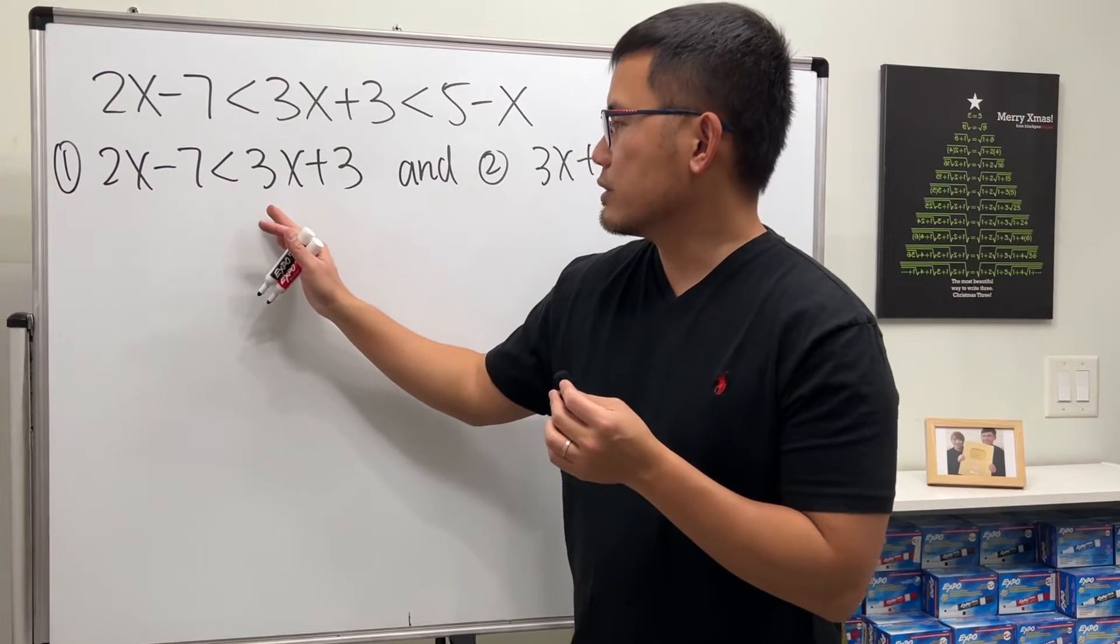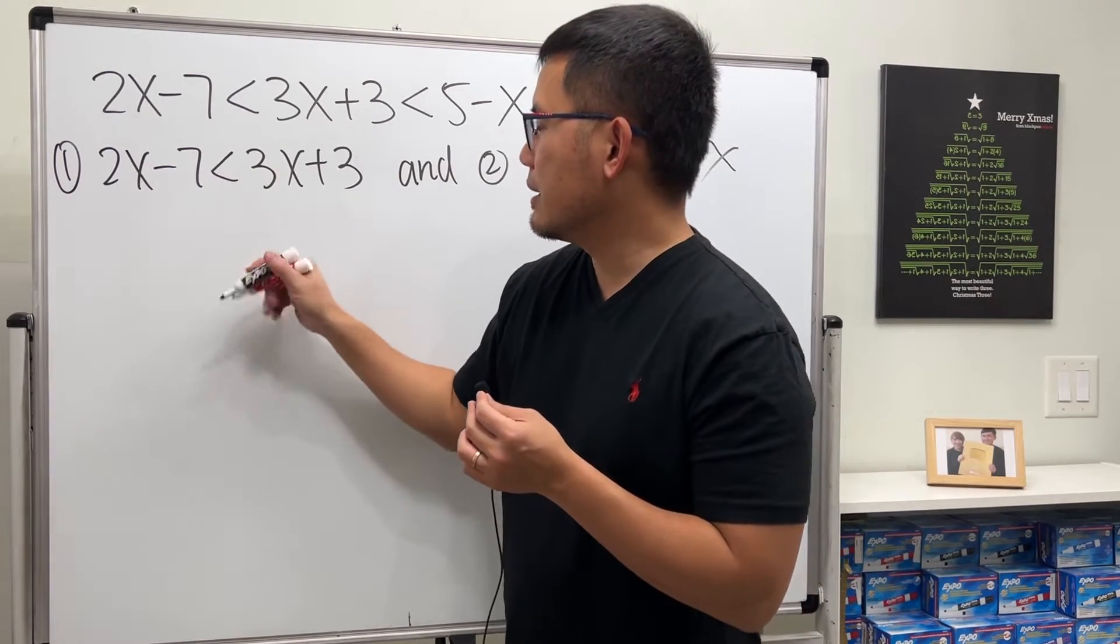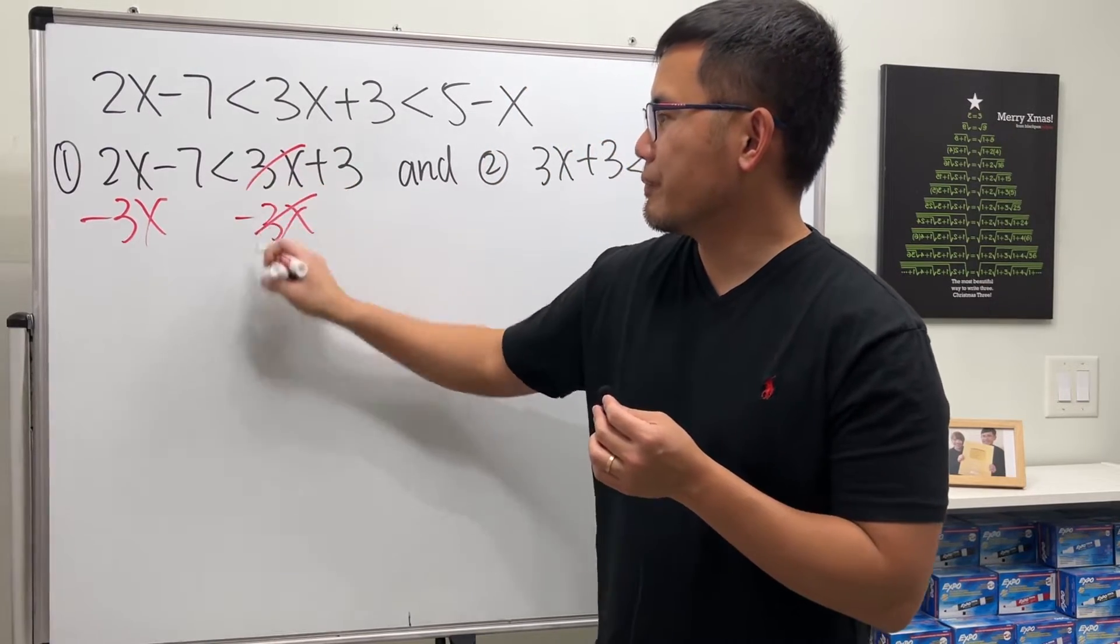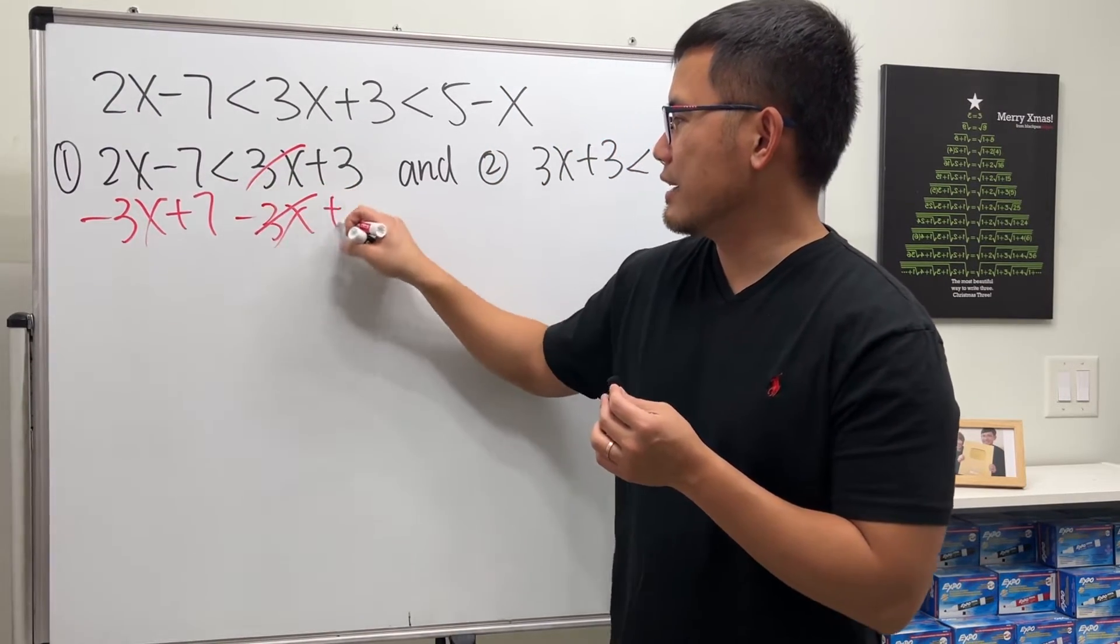So to do so, of course, do the usual business, move this to the other side. So I'll show you minus 3x, minus 3x, cancel, plus 7, plus 7, cancel.